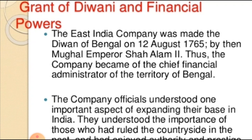Grant of Diwani and Financial Power. This is what we will continue in the next chapter — Ruling the Countryside — the Grant of Diwani and Financial Power. The East India Company was made the Diwani of Bengal on 12th August 1765 by the Mughal Emperor Shah Alam II. Thus, the company became the chief financial administrator of the territory of Bengal.